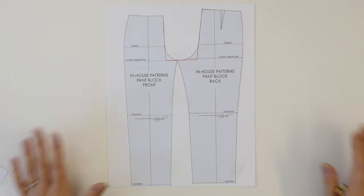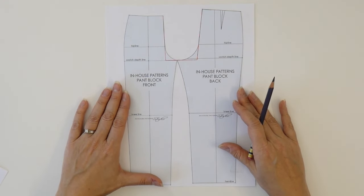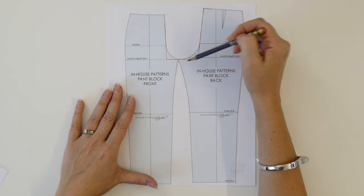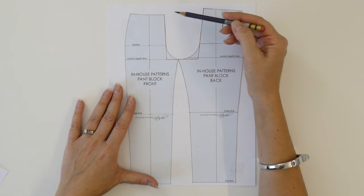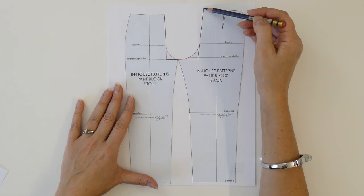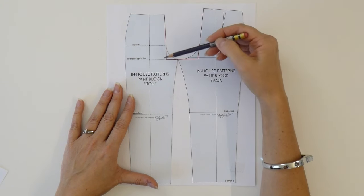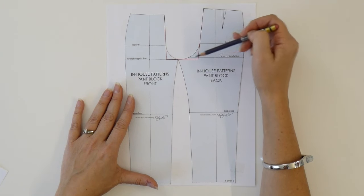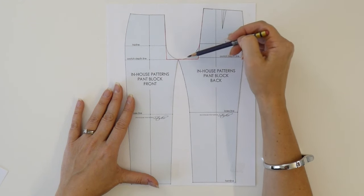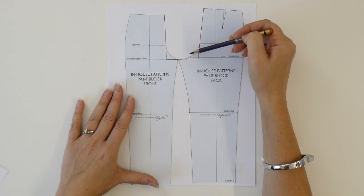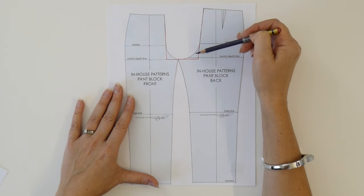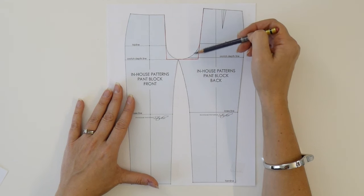Now that we know where the crotch length, the crotch depth, and the crotch curves are on the body, we can take a look at the pant pattern and define them here. The crotch length is the distance between the center front waistline and the base of the torso at the front, and the center back waistline and the base of the torso at the back. The crotch depth goes from center front to center back. The negative space in between is where your body actually sits in a pair of pants — so if the curves don't align to the shape of your curves, you'll get ill-fitting pants.